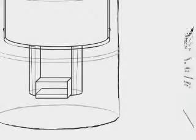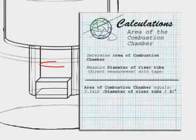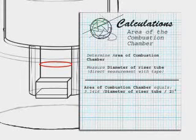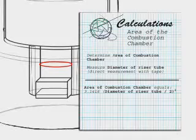Determine the area of the combustion chamber. Measure the diameter of the riser tube with a measuring tape. The area of the combustion chamber equals 3.1416 times the diameter of the riser tube divided in half squared.